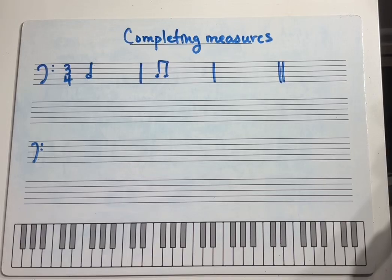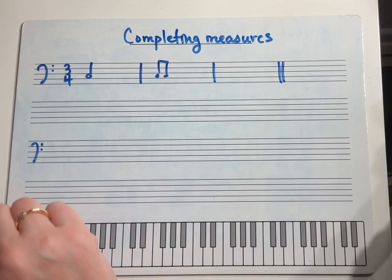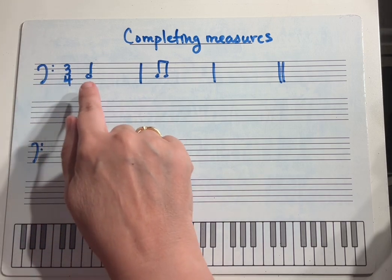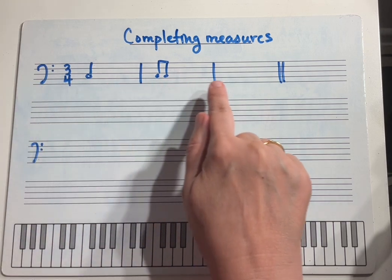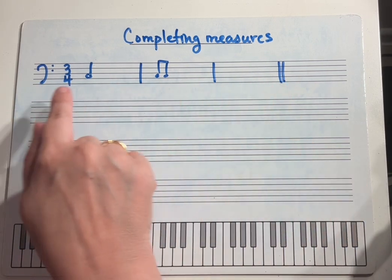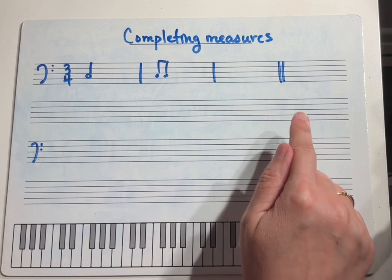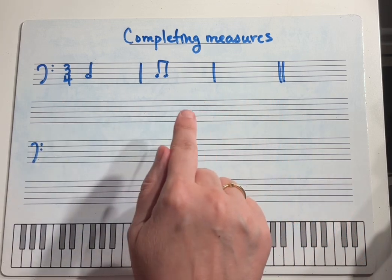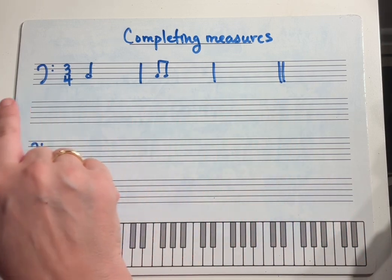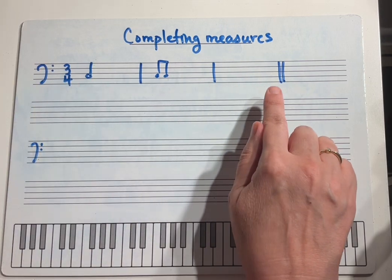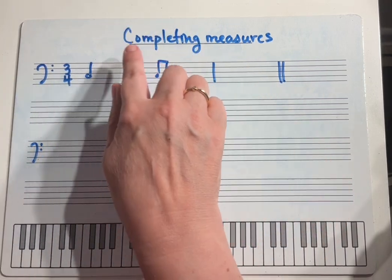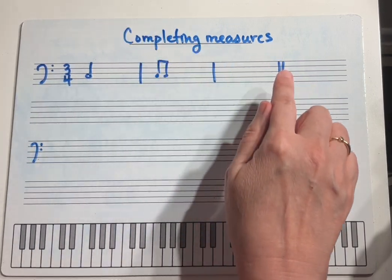We've done a few exercises where you've had just what looks like half of a finished example — there's obviously something missing if you look at this. So I just thought I'd give you a review video. We're calling this Completing Measures.